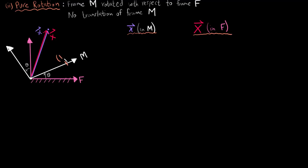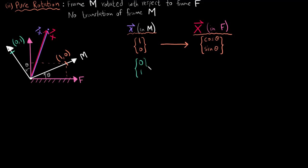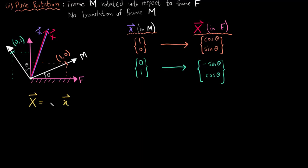Let me define a point on the x-axis of the moving frame as (1, 0). By using simple geometry, the same point when defined with respect to the fixed frame gives cosine of theta and sine of theta. Similarly, by defining a point on the y-axis of the moving frame as (0, 1), and again by using simple geometry, the same point when expressed in the fixed frame gives negative sine of theta and cosine of theta. I would encourage you to pause this video and make sure you understand how I am going from one frame to another. For the case of pure rotation, whenever I need to go from coordinates given in the moving frame to coordinates in the fixed frame, I just need to multiply the coordinates in the moving frame by a matrix A, which is the rotation matrix — also called an orientation matrix — and for the 2D case it is a 2x2 matrix.